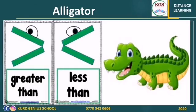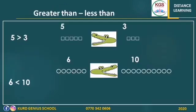Look — this is the alligator. He is very hungry. He always eats the biggest number because he is so hungry. In math, we use signs for greater than and less than, like the alligator's mouth. The open end of the sign goes to the bigger number. The easy way to understand these symbols is to remember how we read. When we read a book, we read from left to right. We do the same when we compare numbers — we start from left to right, and it helps us know which symbol to use.